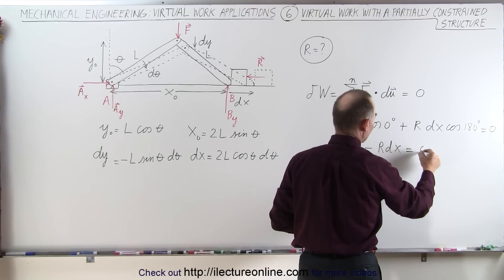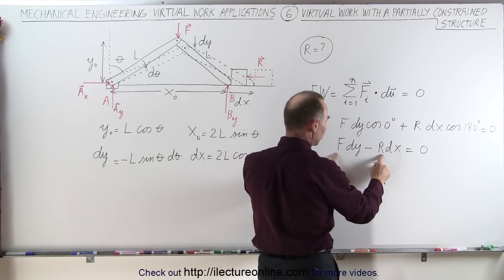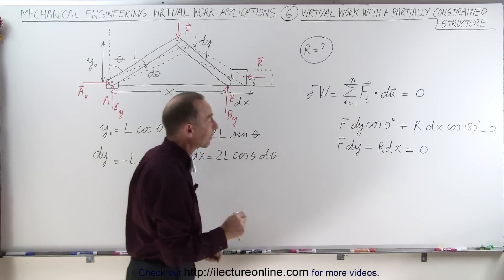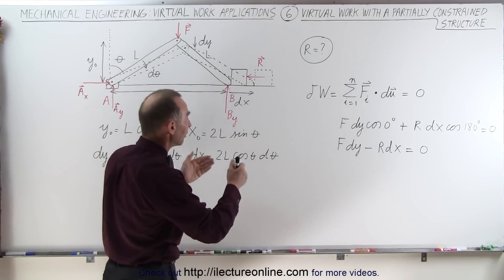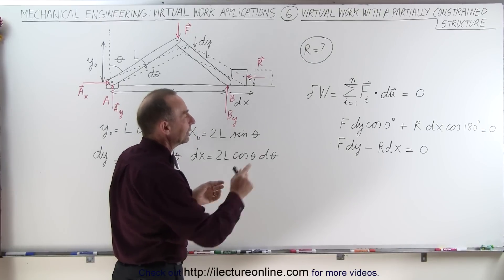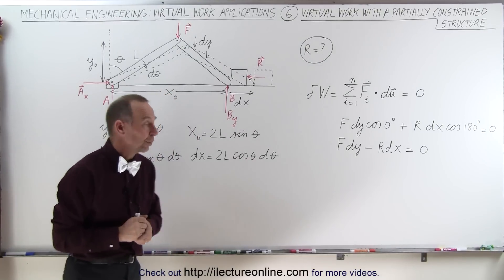equals zero. Now, keep in mind that F and R are the magnitudes of F and R, and dy and dx are the magnitudes of dx and dy, because we've taken care of the direction of the virtual displacement by taking the cosine of the angle between them.